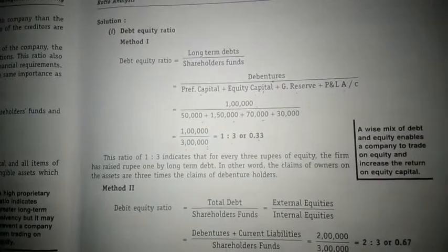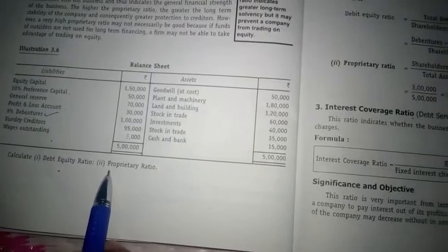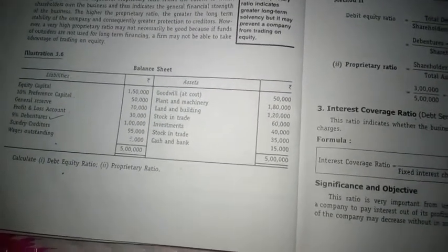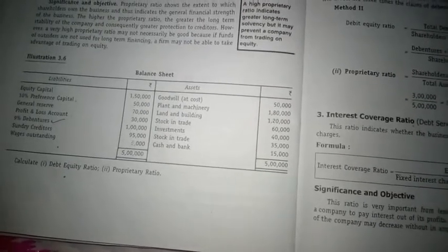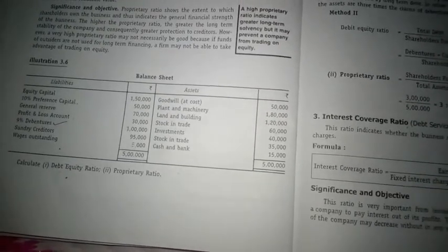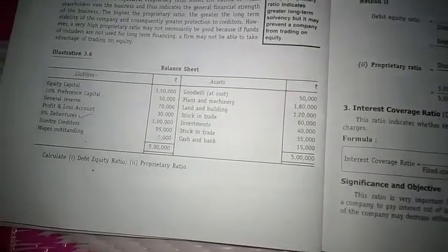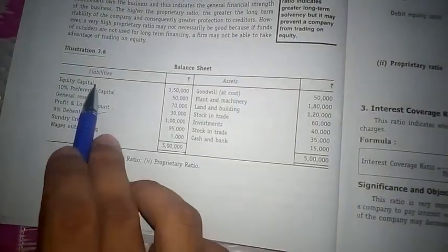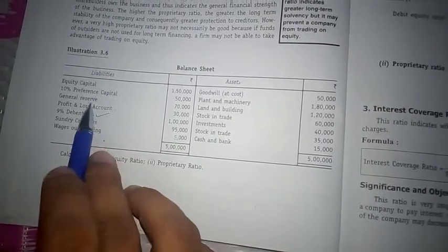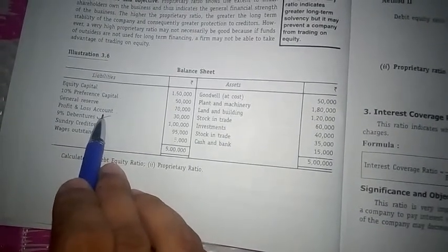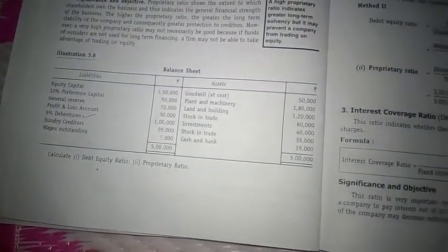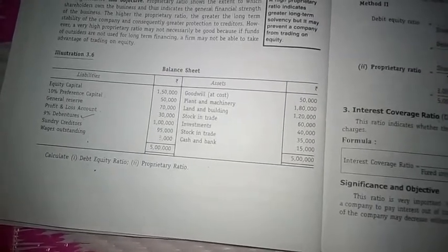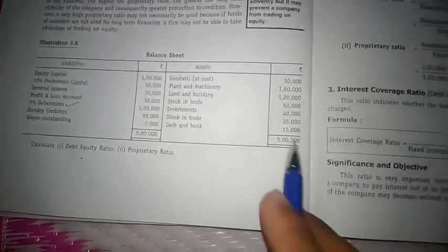They also ask us to calculate proprietary ratio. To calculate proprietary ratio, the information we require is total shareholders fund and total assets. Total shareholders fund — equity share capital plus preferential capital plus general reserve plus profit and loss account — equals 3 lakh rupees, and total assets, meaning total fixed assets plus total current assets, is 5 lakh.